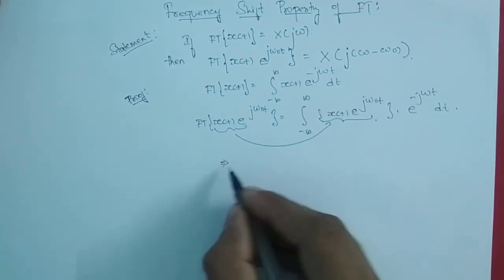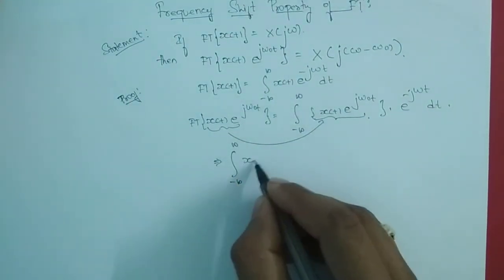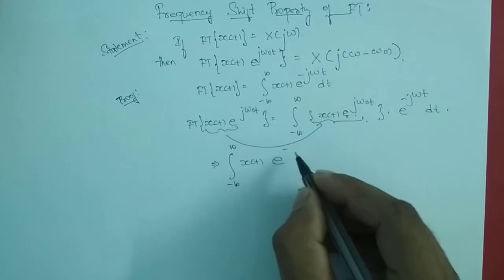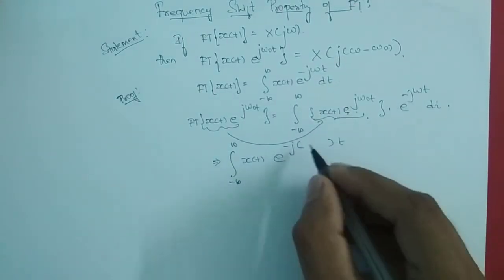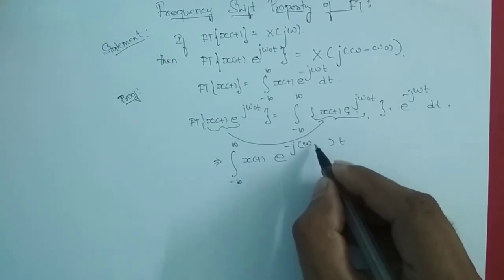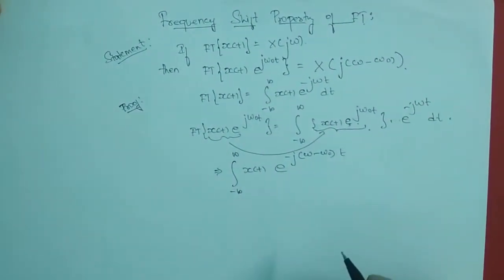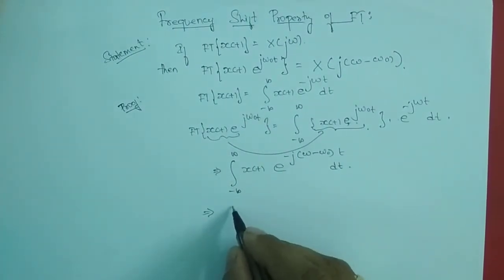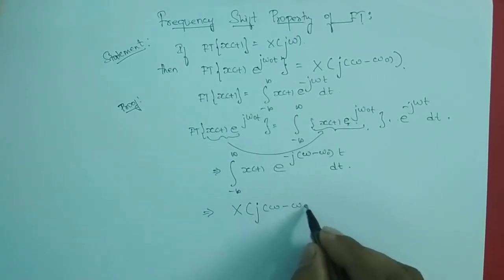Next step: integrating from minus infinity to infinity, for these two exponential terms I will take common — we get e^(−j(ω − ω₀)t). So this becomes the integral of x(t) · e^(−j(ω − ω₀)t) dt, which from the definition can be written as capital X of j(ω − ω₀).